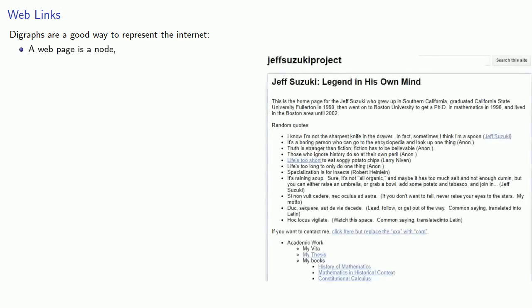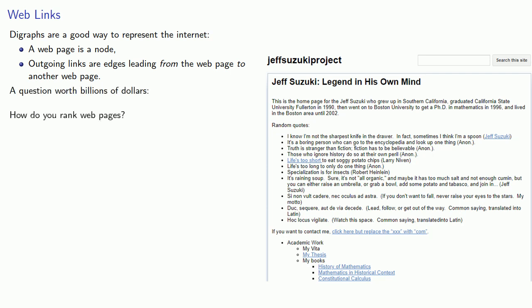A web page or website is a node, and outgoing links are edges leading from the web page to another web page. And this leads to a question whose answer is worth billions of dollars: How do you rank web pages?